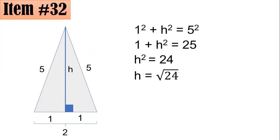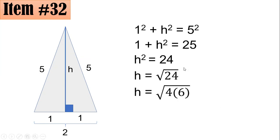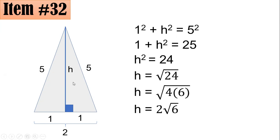We only take the positive square root since there is no such thing as a negative length for the altitude. Since 24 is factorable as 4 times 6, and 4 is a perfect square, the square root of 4 is 2. Since 6 has no perfect square factor other than 1, it remains inside. Thus, the height of this triangle is 2 square root of 6.